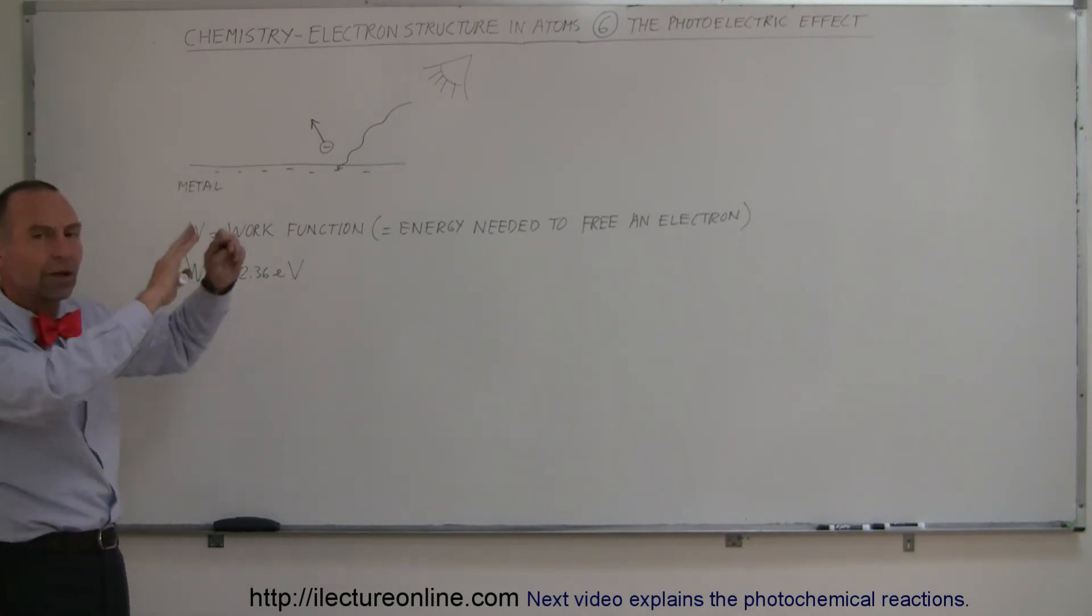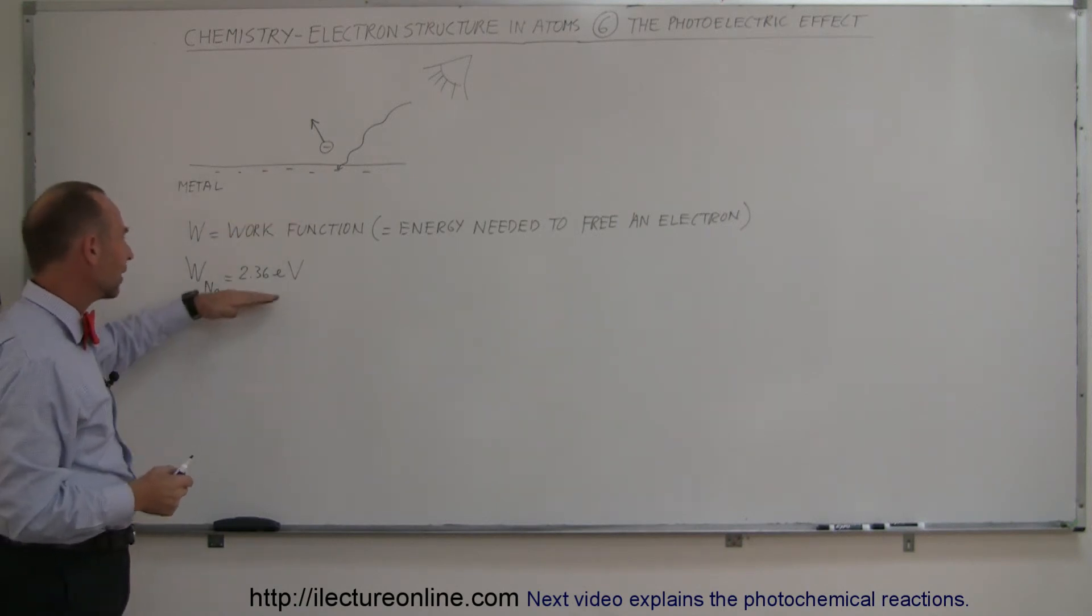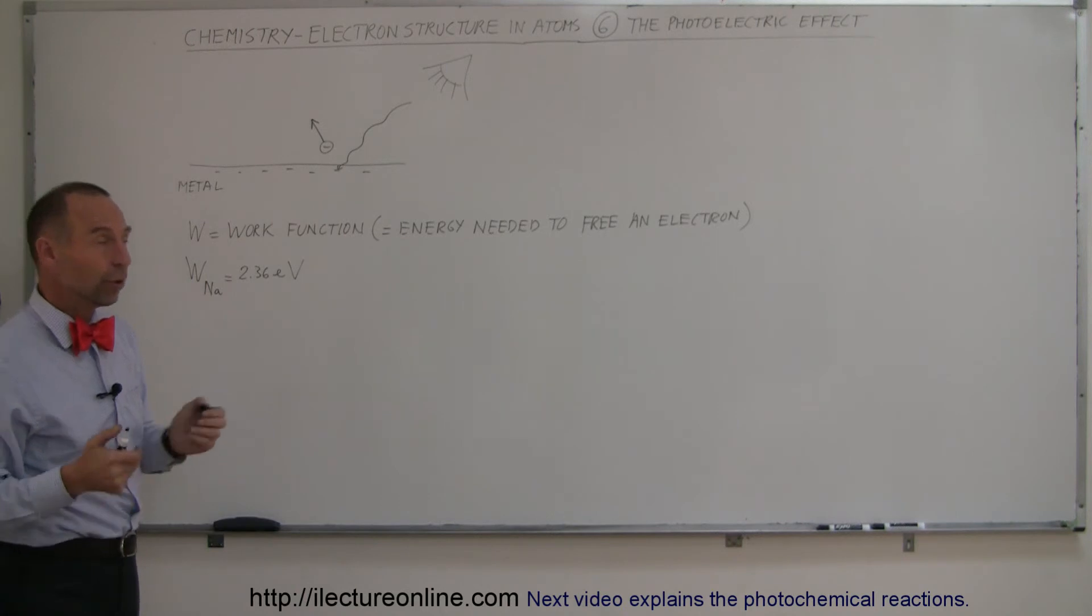Of course, I'm not drawing the exact structure of what the experiment looked like, but basically, that was it. So, what kind of light can set an electron free in a sodium, in a sodium atom, so what kind of photon has at least 2.36 electron volts?